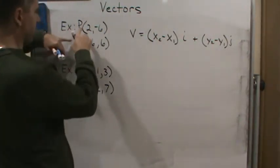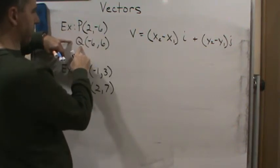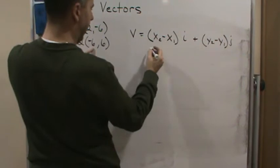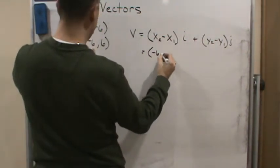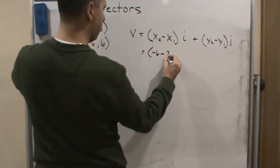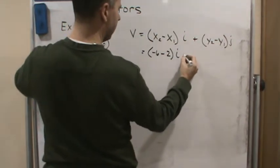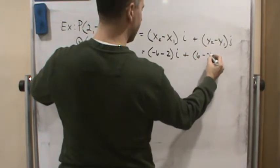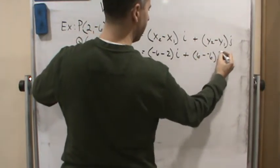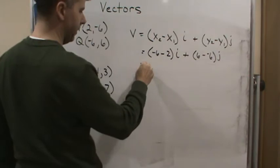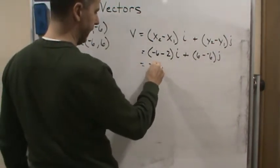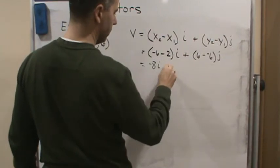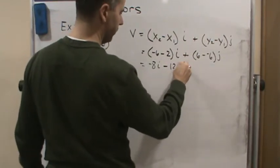So again, this is the initial point, this is the terminating point. Make sure you know which is which. So I'm going to do x2 minus x1. That's going to be negative 6 minus 2 times i plus 6 minus negative 6 times j. And now I just simplify. So this is going to be negative 8i plus 12j.